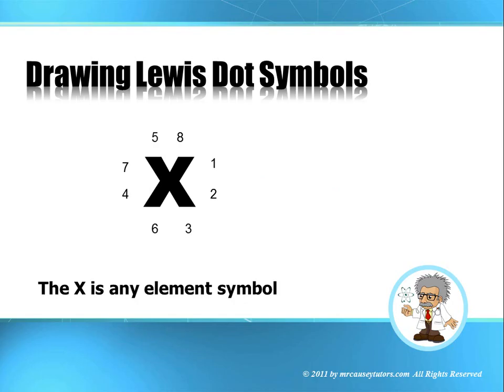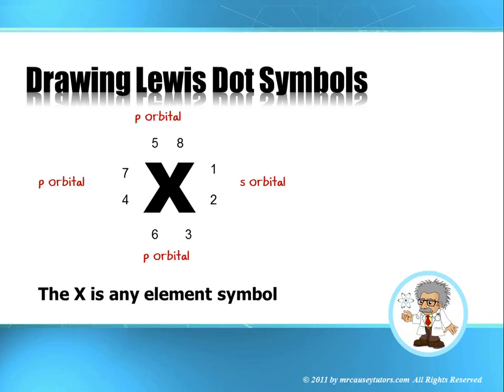Now, back up and go over that again if you didn't get it. Because what you just saw is what drawing Lewis dot symbols is all about. There's the S orbital, the P orbitals, all together. Awesome.